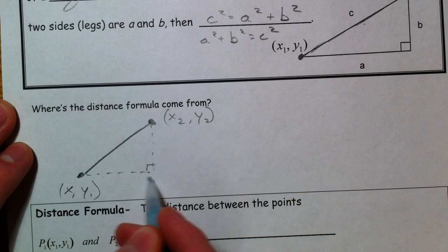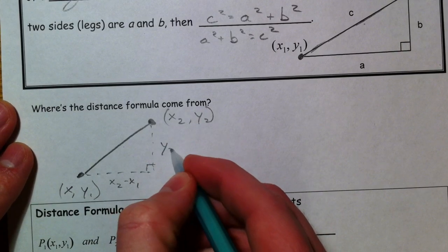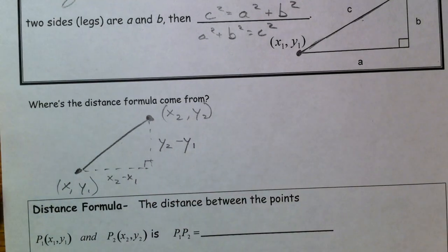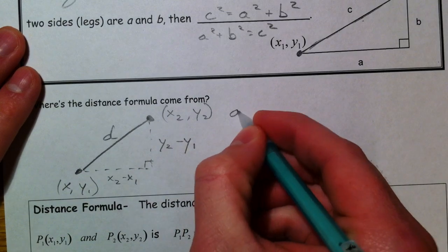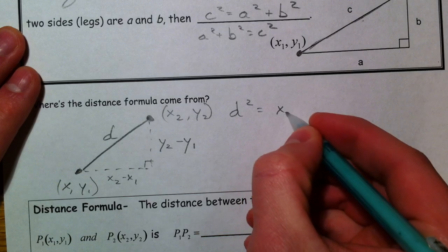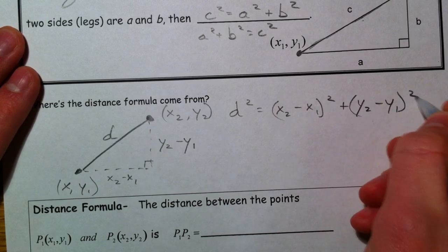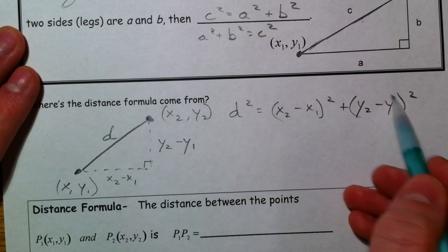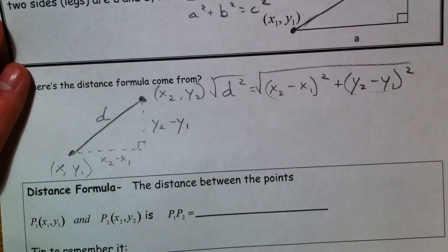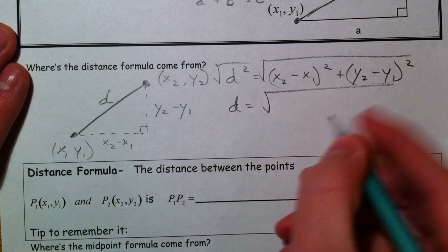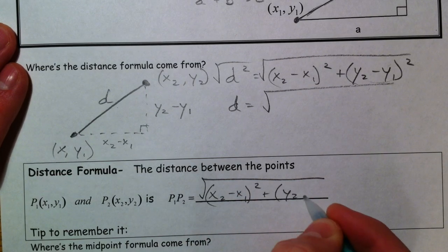To find how far right you went, you have to figure out the difference between the two x's, so you would do x₂ minus x₁. And to find the difference between the y's, how far up you went, you would do y₂ minus y₁. This works the other way around as well. Then Pythagorean theorem says that this distance squared is equal to (x₂ minus x₁) squared plus (y₂ minus y₁) squared.